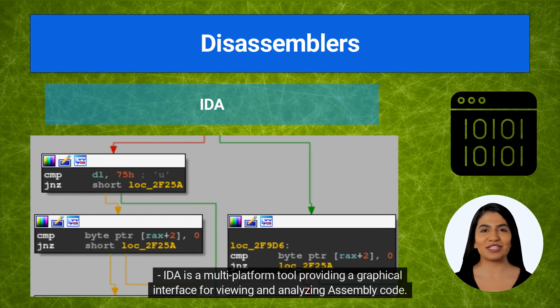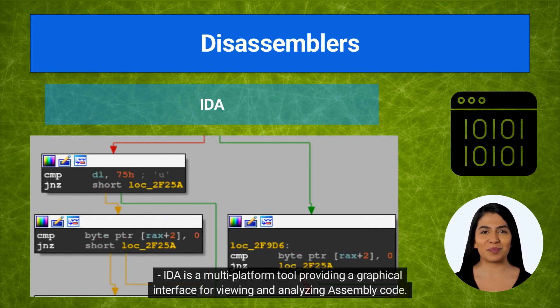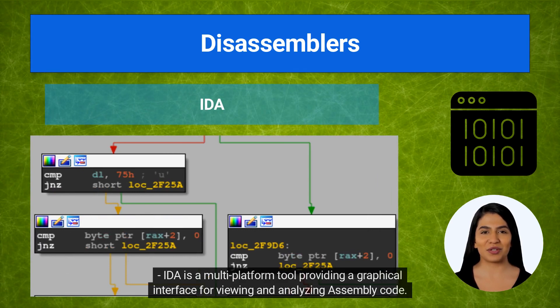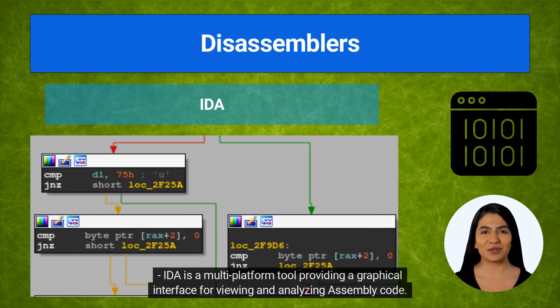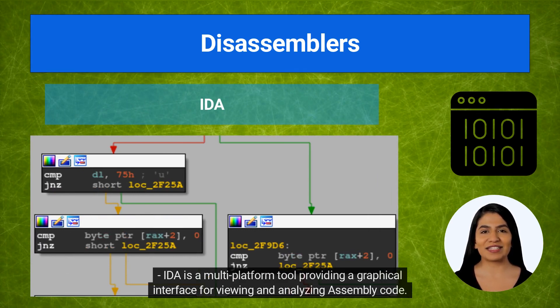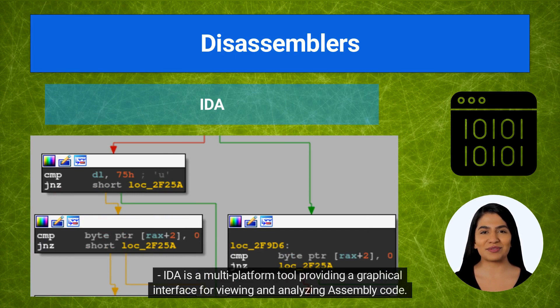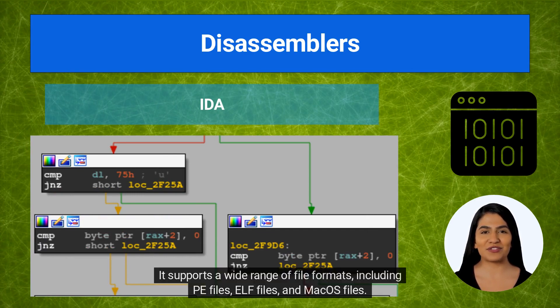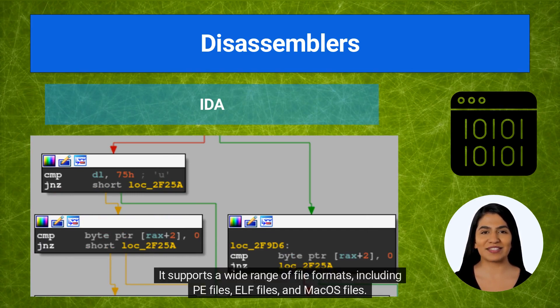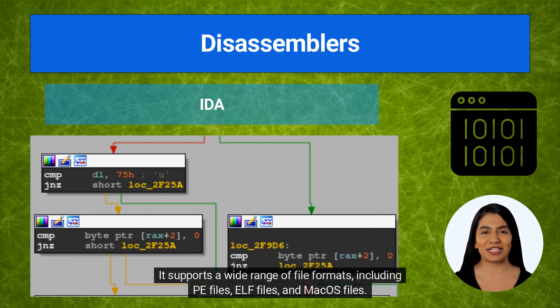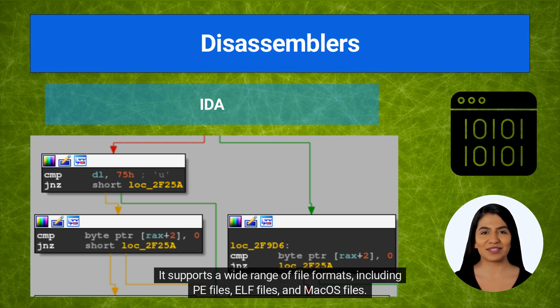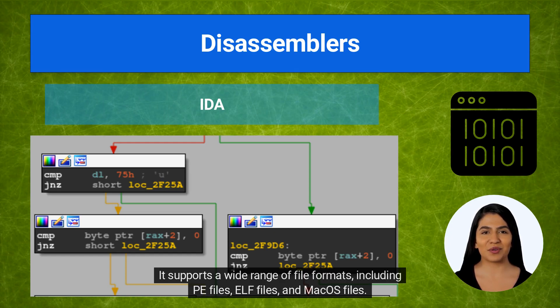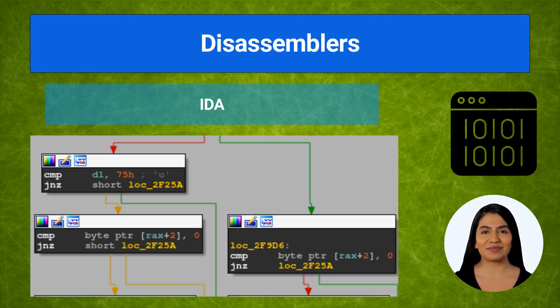IDA is a multi-platform tool providing a graphical interface for viewing and analyzing assembly code. It supports a wide range of file formats, including PE files, ELF files, and macOS files.